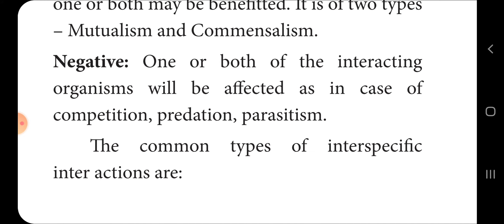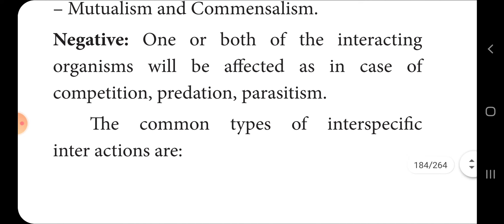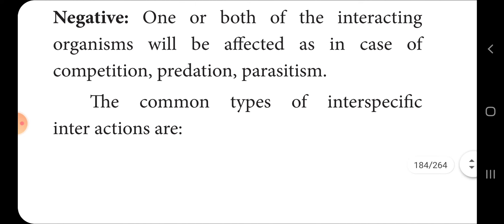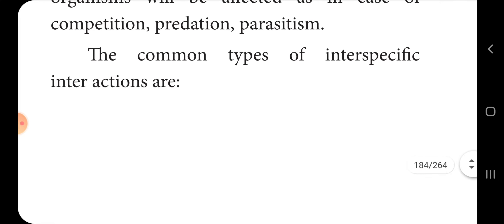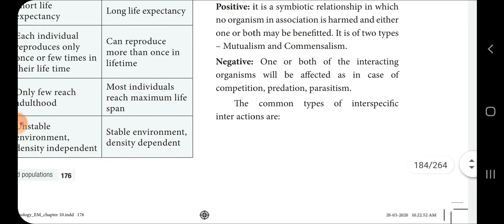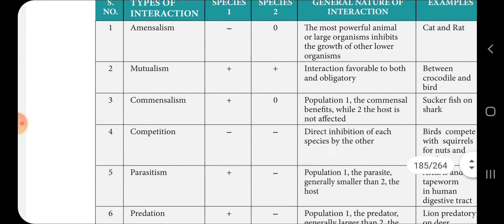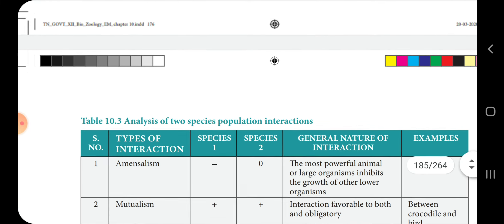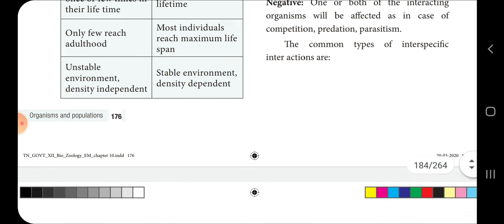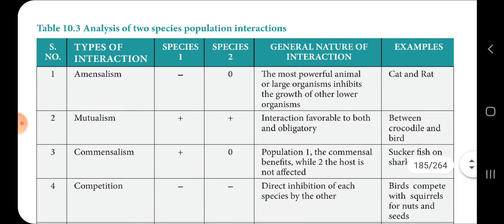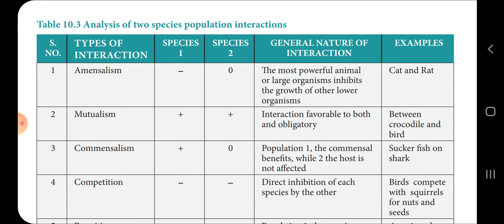In the negative aspect, one or both of the interacting organisms will be negatively affected. Types of negative interactions include competition, predation, and parasitism. These are common types of interspecific interactions.